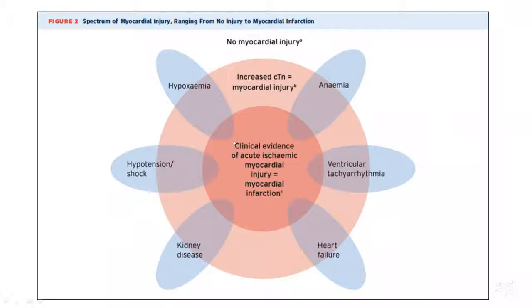Typically with a type 1 MI, it is the most common cause for troponin elevations. However, there are several other causes that can lead to troponin elevation. You can have sepsis, kidney disease, any hypoxic event, respiratory failure, or severe anemia — all of which can lead to elevated troponins. Heart failure is also a big one.